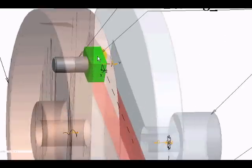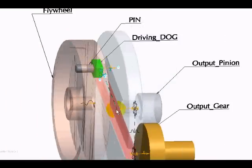The dog is free to rotate about the pin axis and the dog is also forming a higher pair with a sliding pair between the green surface and the red surface that is the output pinion.